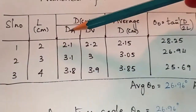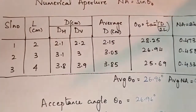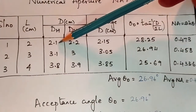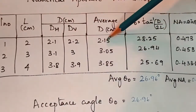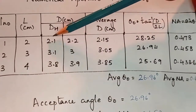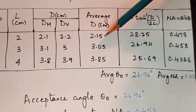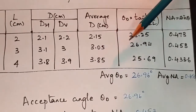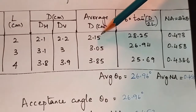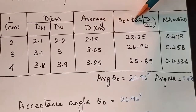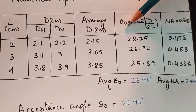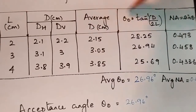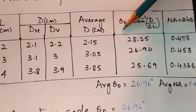I have recorded the horizontal and vertical diameter marked on the graph for distances of 2, 3, and 4 centimeters, and taken the average. We measure horizontal and vertical diameter so that the error in measurement of diameter and radius is minimum. Once we know D, we substitute D/2 in the formula for theta naught. On substituting D as 2.15 and L as 2 centimeters, we get theta naught as 28.25 degrees.